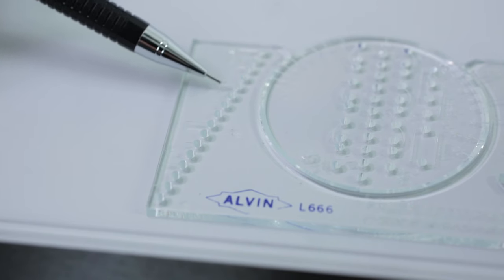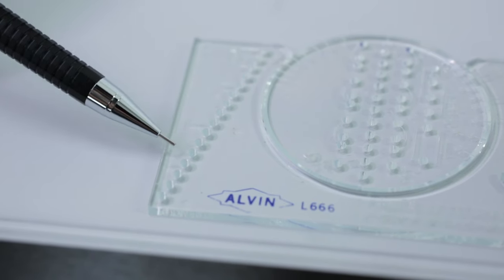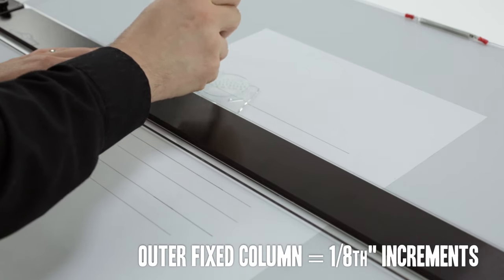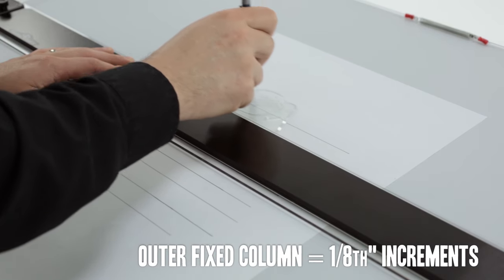The first thing you'll see on your guide is a set of sixteen holes. This group of holes will allow you to create guidelines in one-eighth inch increments.